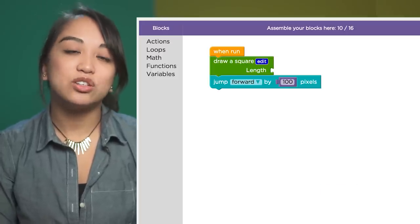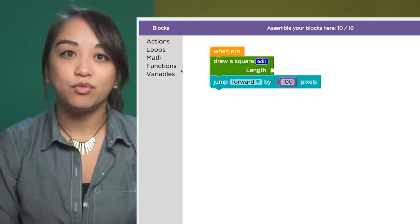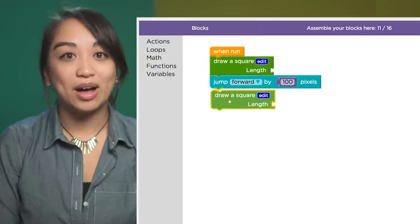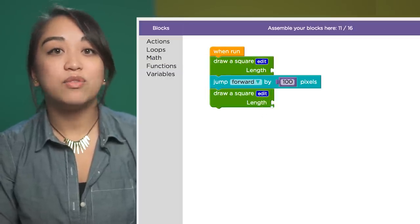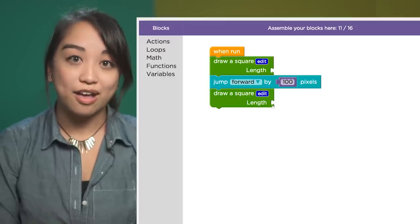Click save and close and drag out your new create a square block from the functions category in the toolbox. You'll notice there's an empty space next to length because the function wants to know what value the parameter length should have.